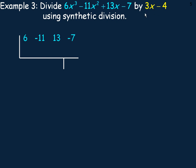Now, the restriction here is 3x minus 4 cannot equal 0. To find the restriction, I want to solve for x here.